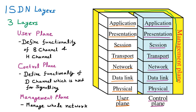To summarize the three layers of ISDN: the first is the user plane, inspired by OSI model layers, taking care of the B channel (bearer channel) and H channel (hybrid channel) for sending data. The second is the control plane, which takes care of the D channel — the data channel used for signaling. The third is the management plane, which manages the whole network and also handles the user and control planes. That is all about the layers of ISDN.